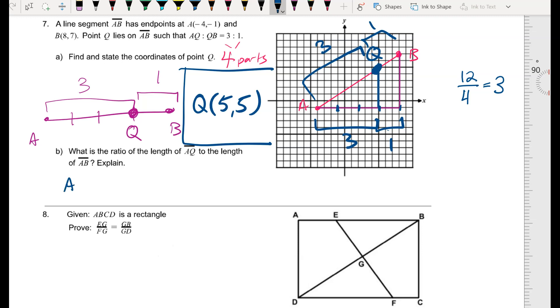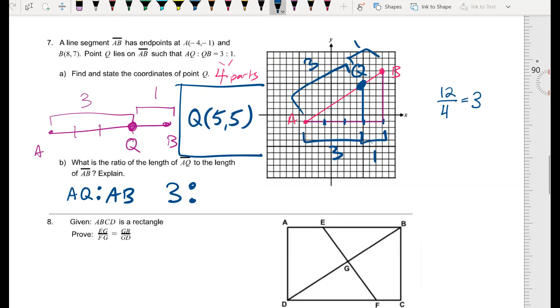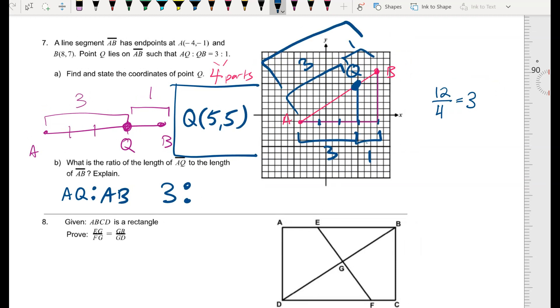Part B is asking me what's the ratio of AQ to AB. Well, notice that AQ is three equal parts, and AB is representing the whole line segment, which is broken up into four congruent parts. So that would be comparing three congruent parts to four congruent parts, so that's a three to four ratio.